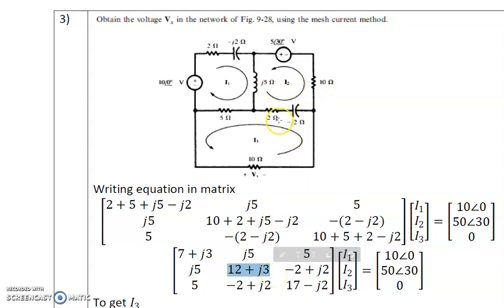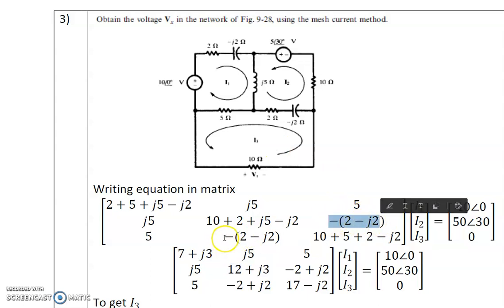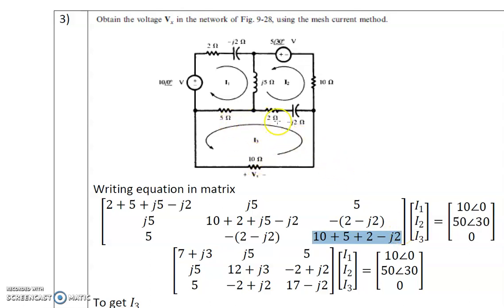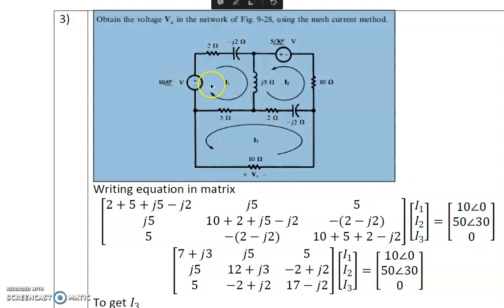For loop 3, the self impedance Z33 = 10 + 5 + 2 minus j2. The voltage in loop 1 is 10 at angle 0 degrees, since the source arrow points toward the plus terminal. In loop 2, the arrow also points toward the plus terminal, so the voltage is 5 at angle 30 degrees. Loop 3 has no source.